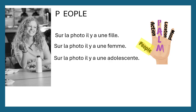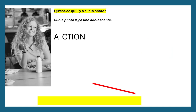We could say 'sur la photo il y a une adolescente' — on the photo there is a teenager. Or even 'sur la photo il y a une étudiante' — on the photo there is a student. Bear in mind 'étudiante' means an older student, so maybe a university level student. We would use 'élève' for younger students. I've decided to say 'sur la photo il y a une adolescente' — on the photo there is a teenager.